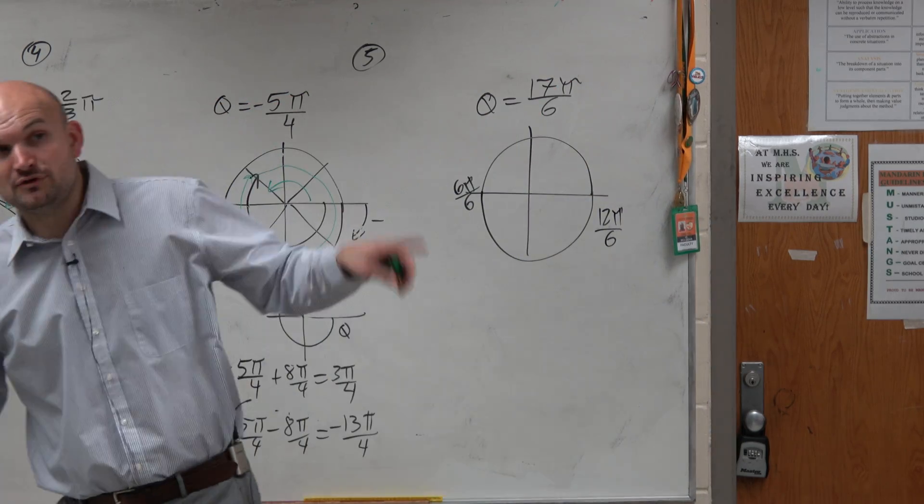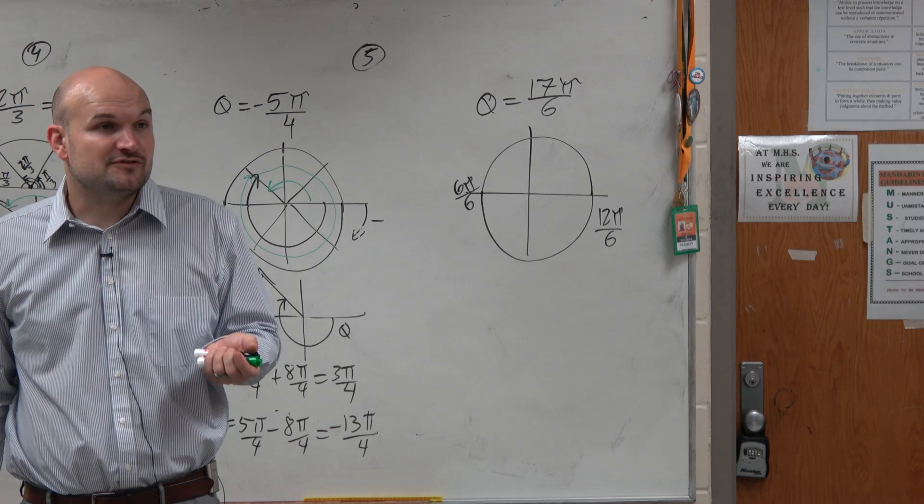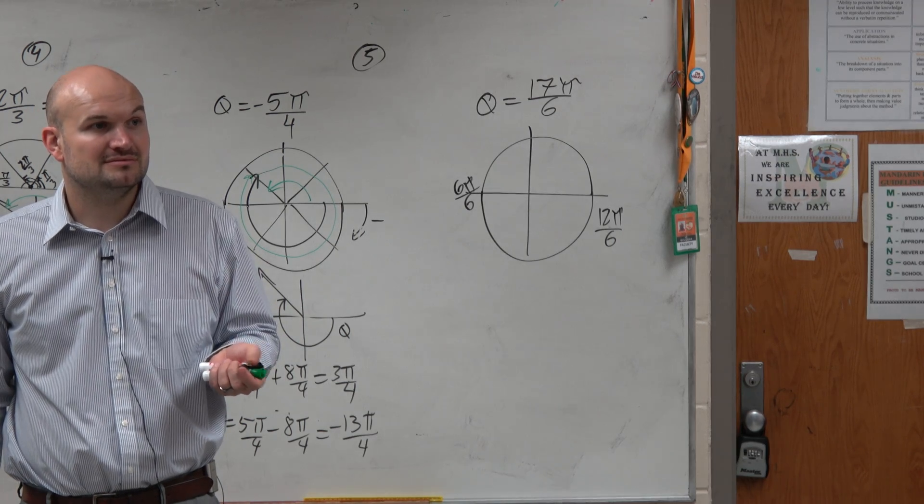So if I do a full revolution, I am still short of my angle. How short am I of my angle? 5π over 6.